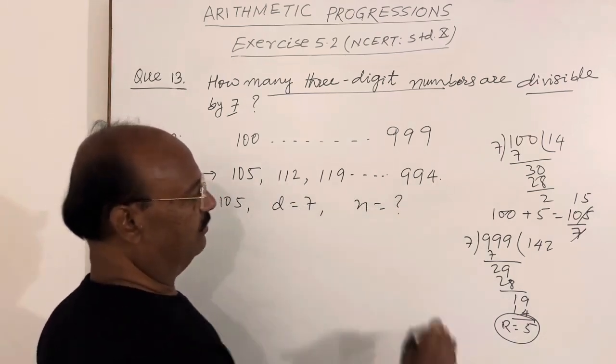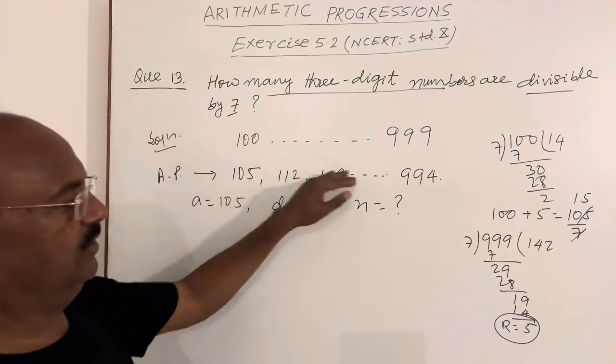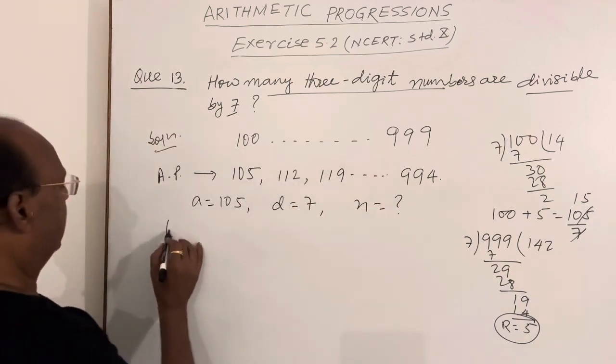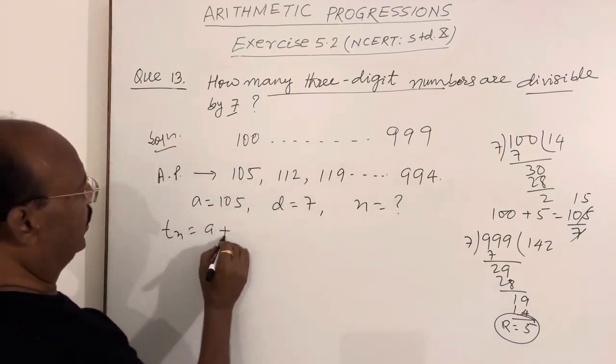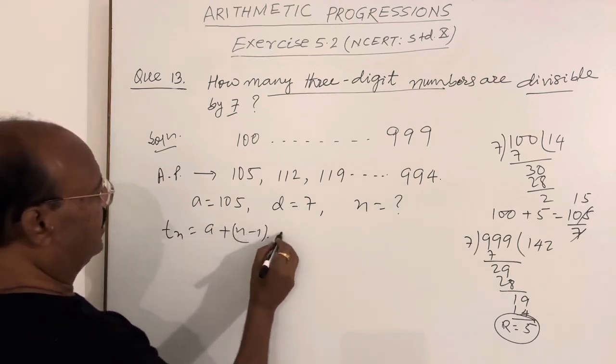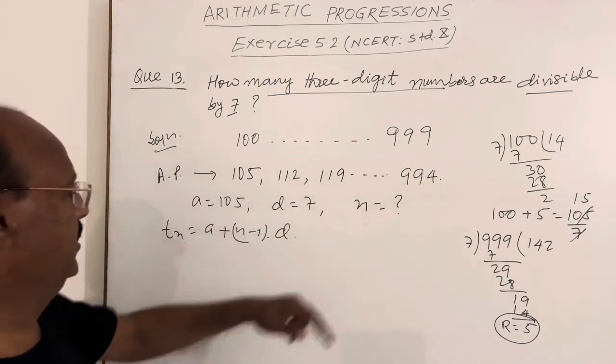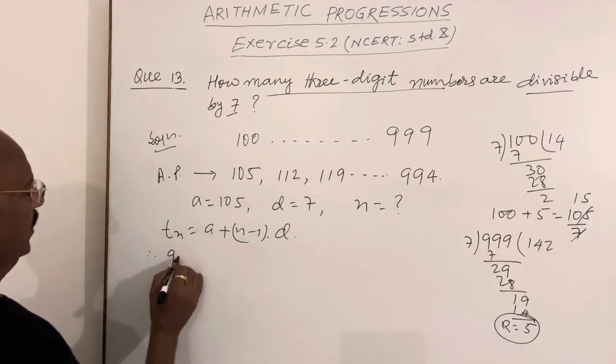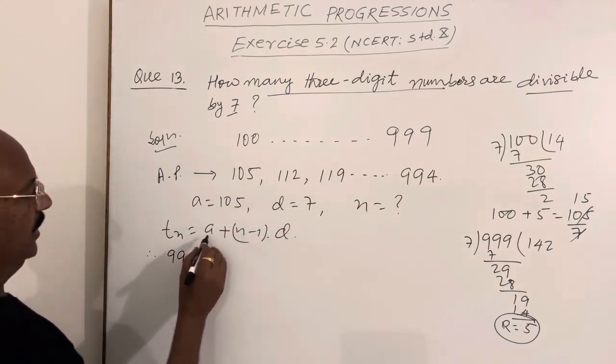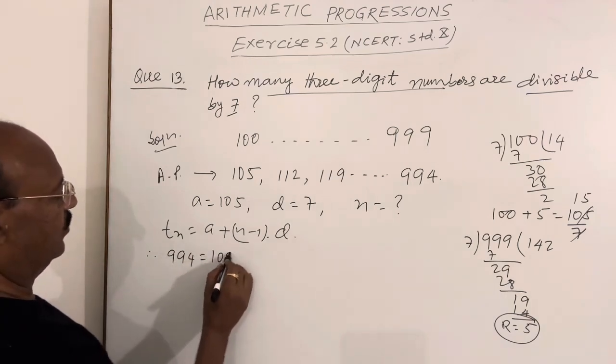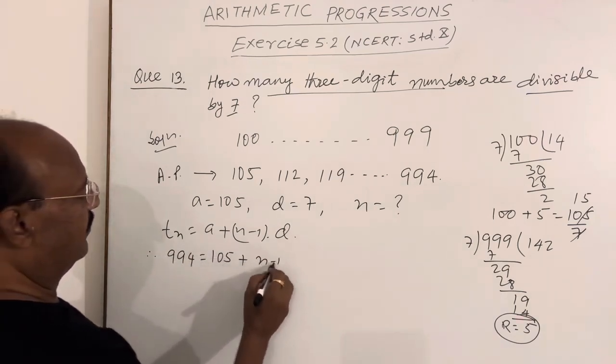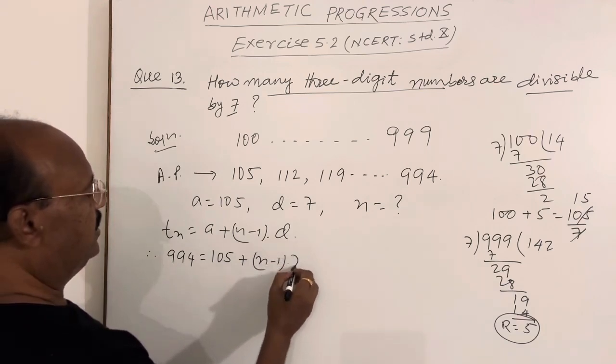Here we have to find the value of n, the number of terms. We'll use the formula: tn equals a plus (n minus 1) times d. tn is the last term, which is 994. So therefore, 994 equals first term 105 plus (n minus 1) into d, which is 7.